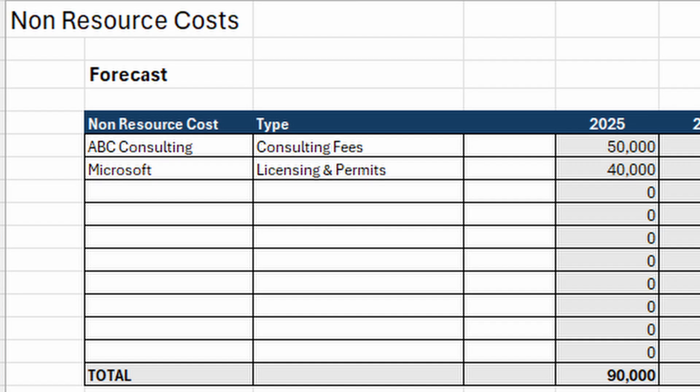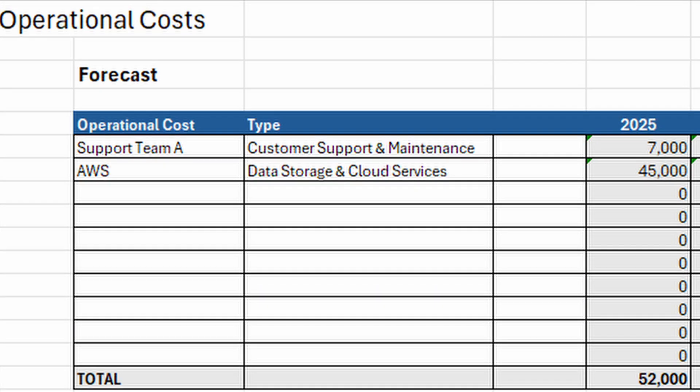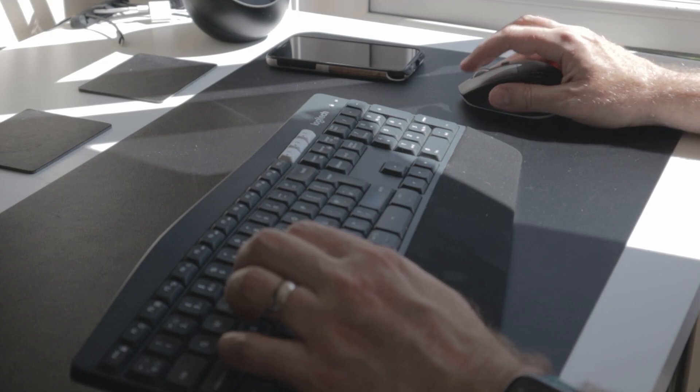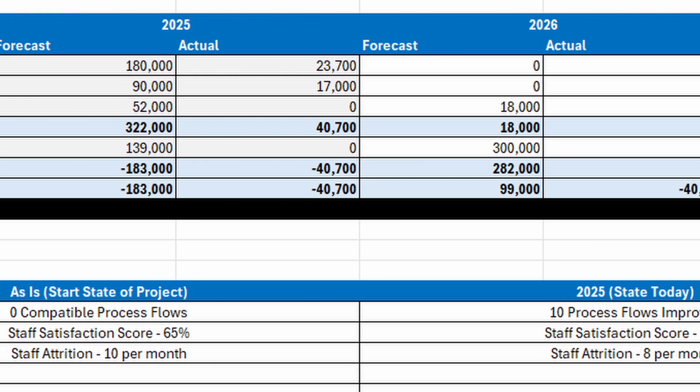It covers historical costs, resource and non-resource forecasts, financial benefits, and even the operational costs of using whatever the project delivers. I was going to show you how to build it, but I spent about two hours tinkering with it, so I'm going to skip past that. I will walk you through exactly how it works, and if you want to use it yourself, there's a link in the description. I've populated the template with a little data to test that values are pulling through correctly and to assist with the demo.